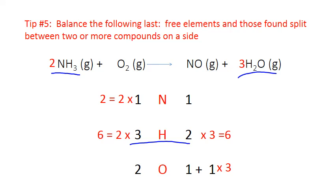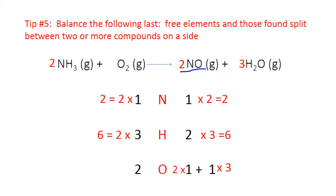Before dealing with oxygen, we'll balance the nitrogen. We have two on one side and one on the other. Place a two in front of the formula on the product side and multiply through. Of course, placing that two is going to influence the first oxygen, so we place that in our atom inventory. Adding together what we've got: two times one plus one times three gives five oxygen total on the right-hand side. Now everything else is balanced, so we have to deal with this oxygen — we have two on one side and five on the other.